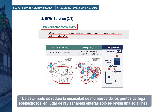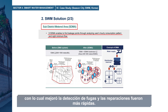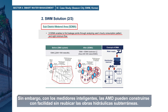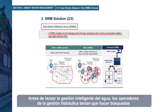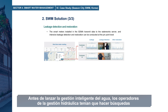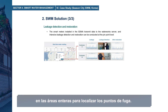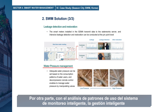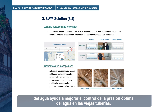This narrowed down the need to monitor suspected leakage points from entire areas to a single line, thereby improving leakage detection and enabling faster repairs. Traditionally, DMAs are made by physical construction of waterworks grids. However, with smart meters, DMAs can be easily built without relocation of underground waterworks. Before launching smart water management, operators had to search whole areas to locate leakage points. However, the system showed accurate leakage points effectively with less effort and time. Through use pattern analysis of the smart monitoring system, smart water management also helps improve optimal water pressure management in aged pipes.